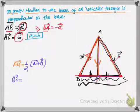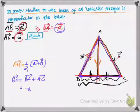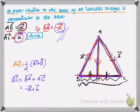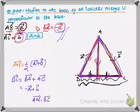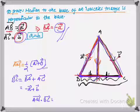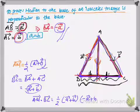For vector BC, moving from B to C is the same as moving from B to A and then A to C, so vector BC equals vector BA plus vector AC, which equals minus a plus b. Now to show AM is perpendicular to BC, the dot product of AM and BC should equal zero. We have vector AM equals one half (a + b) and vector BC equals minus a + b.